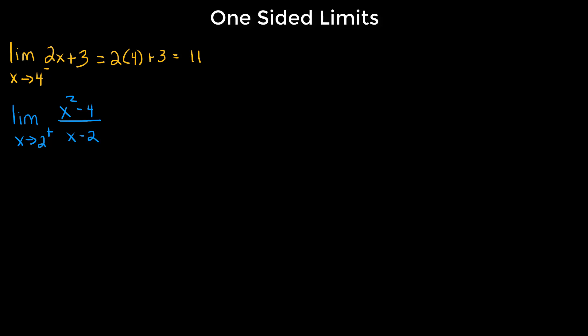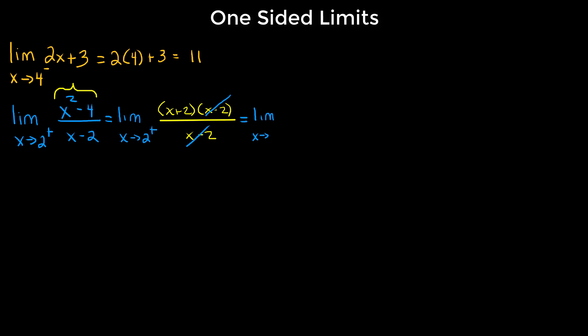Since there's no continuity, we ask: can we simplify? In this example we can rewrite it. The numerator is a difference of squares, so we rewrite it as (x + 2)(x - 2) all over (x - 2). We can cancel the (x - 2) terms, leaving the limit as x approaches 2 from the right of (x + 2). Since x + 2 is continuous, we use direct substitution: 2 + 2 equals 4.